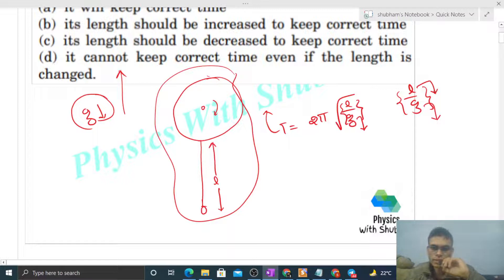...so that this l/g ratio remains constant. If the denominator is decreasing, we can decrease the numerator as well so that l/g stays constant. In that case, the time period won't change and the clock will still keep correct time.